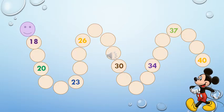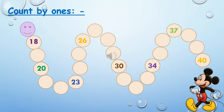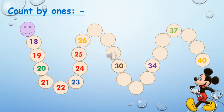Start from 18. Let's count by ones. After 18: 19, 20. After 20: 21, 22, 23. After 23: 24, 25, 26. After 26: 27, 28, 29, 30.